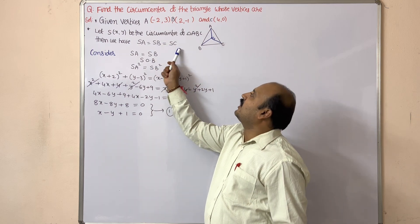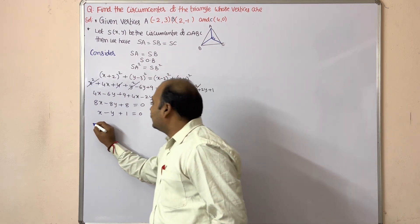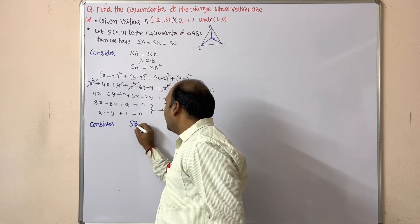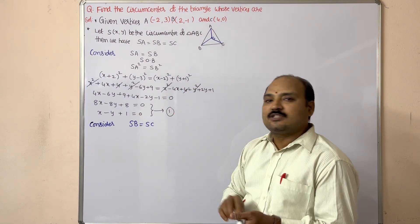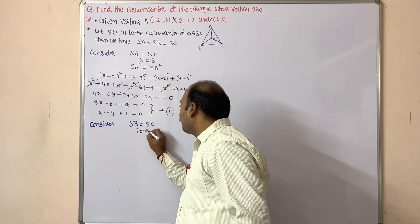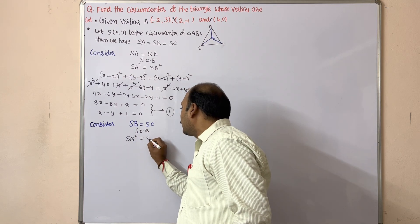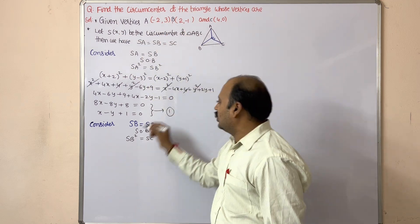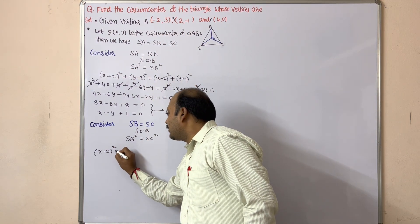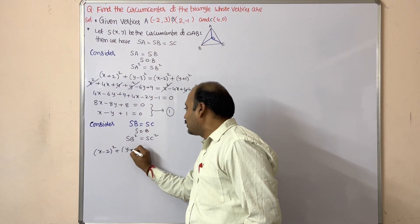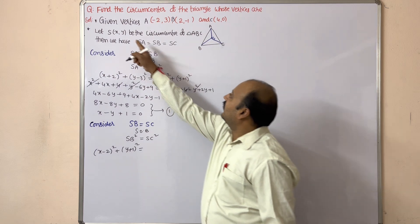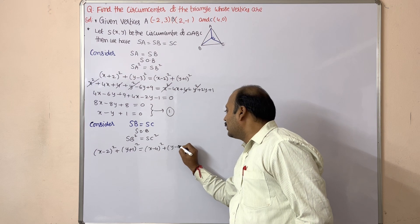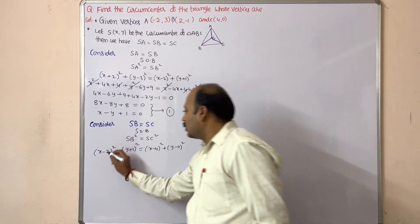Next, consider SB = SC. Squaring on both sides gives SB² = SC². We already have SB²: (x − 2)² + (y + 1)². For SC²: (x − 4)² + (y − 0)².